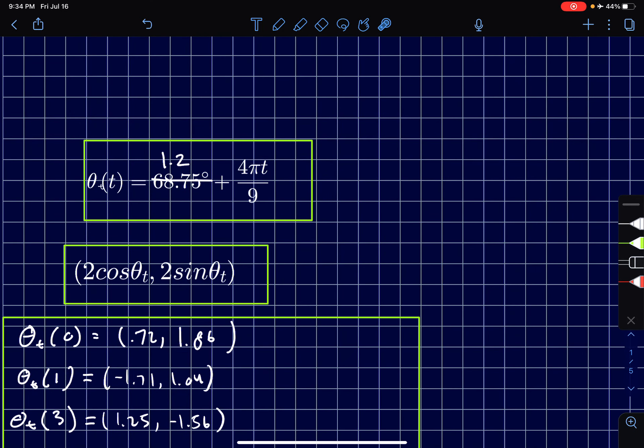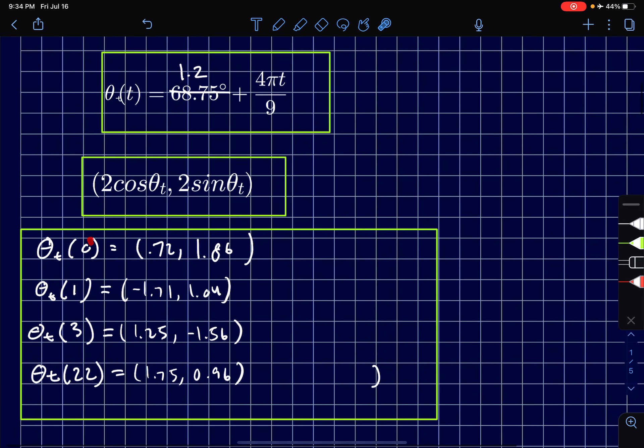Our coordinates are going to be 2 cosine theta and 2 sine theta like we discussed. We plug in 0, 1, 3, and 22 for t and we get (-0.72, 1.86) for t equals 0. I won't read off the answers for you because it's kind of a lot, but the other coordinates are listed here.